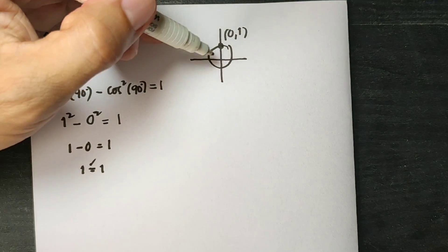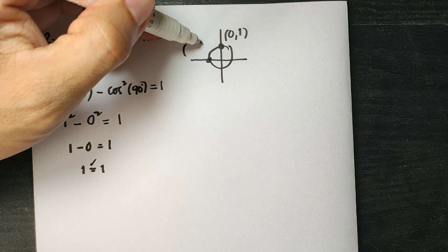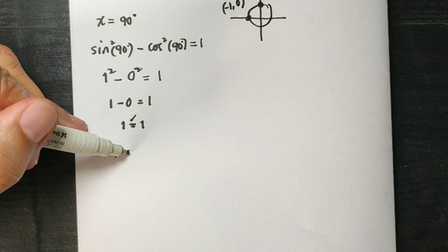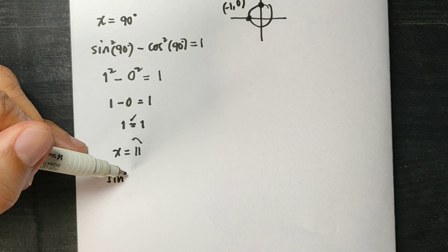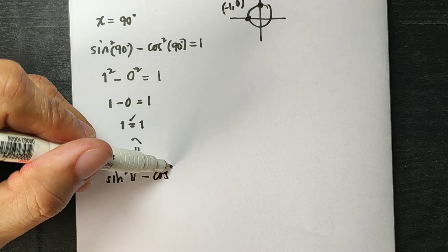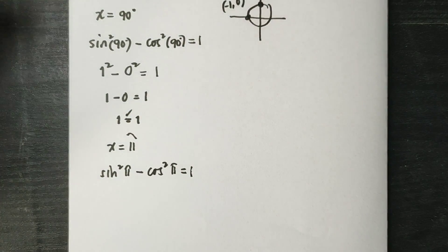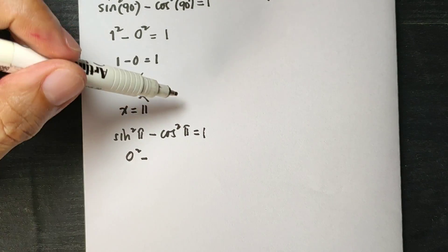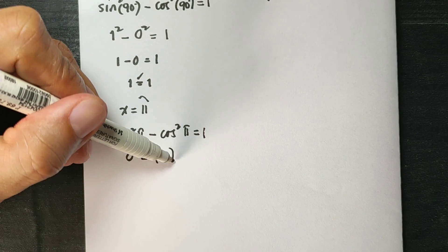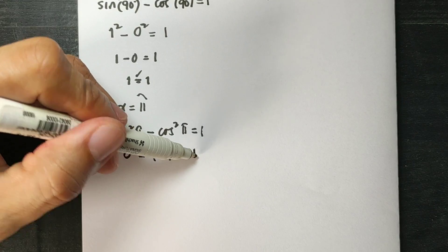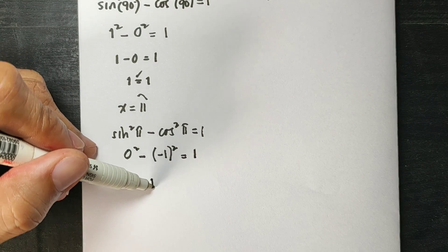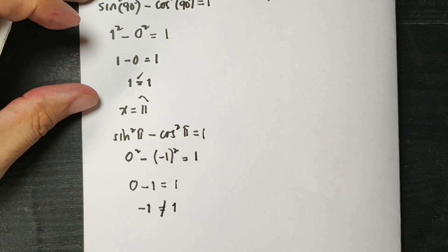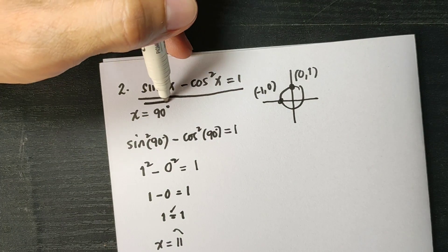What if we use x equals 180 degrees? The coordinates of 180 degrees are negative 1 and 0. The sine of pi is 0, so 0 squared is 0. The cosine of pi is negative 1, so negative 1 squared is 1. That gives 0 minus 1 equals 1, which means negative 1 is not equal to 1. Since it fails at x equals 180 degrees, this is a conditional equation, not an identity.